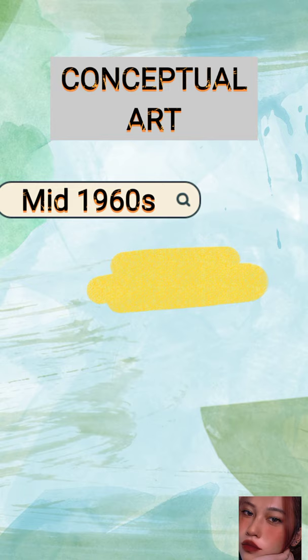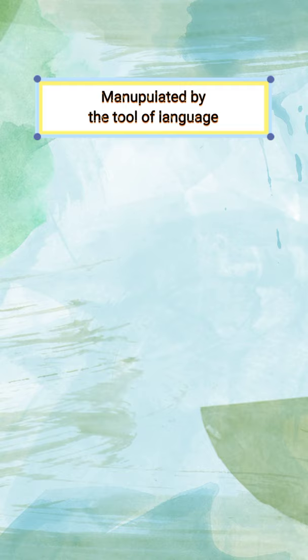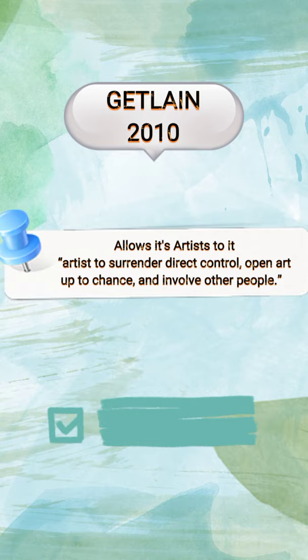Conceptual art arises in the mid-1960s and is an art that prioritizes ideas, also known as post-object art or art as idea. It is manipulated by the tool of language and sometimes documented by photography. The Geth Lane in 2010 further revealed that it allows its artists to surrender their control, open art up to chance, and involve other people.